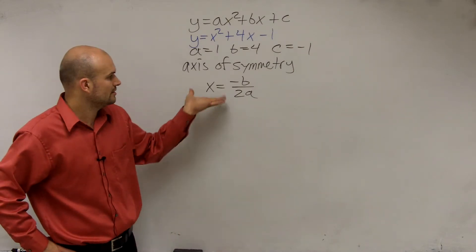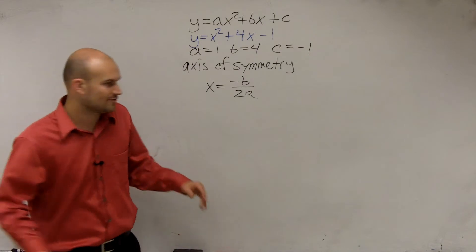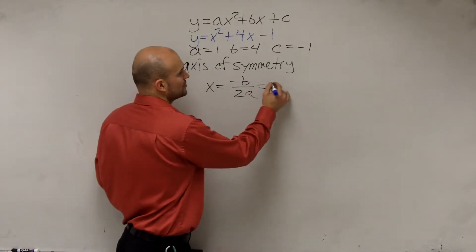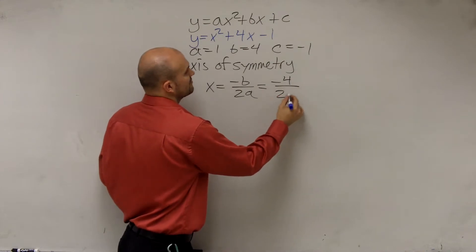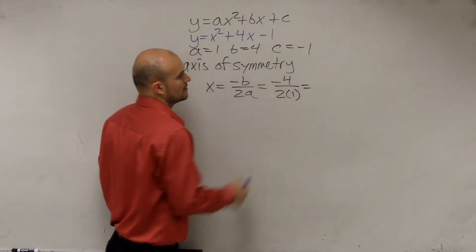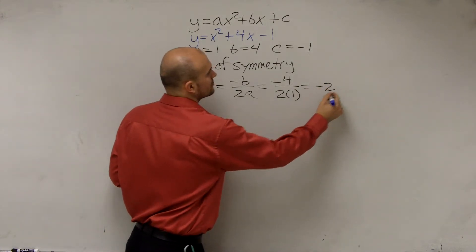Then, to determine the axis of symmetry, you just have the formula x equals opposite of b divided by 2a. So for your first answer, all you guys had to do is plug in the opposite of b, which is negative 4, divided by 2 times 1. So negative 4 divided by 2 is going to equal negative 2.